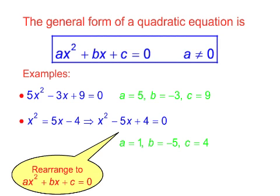For instance, 5x² minus 3x plus 9 equals 0. In this case, a equals 5, b equals minus 3, and c equals 9.